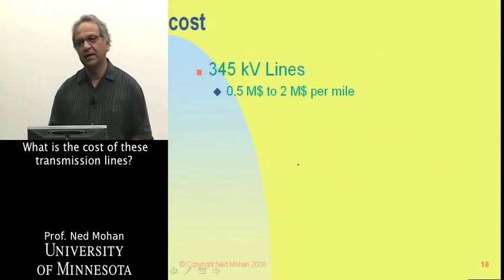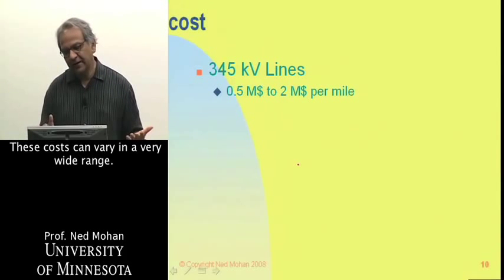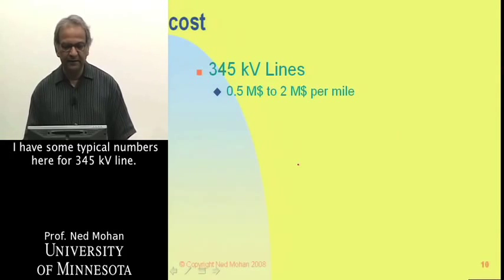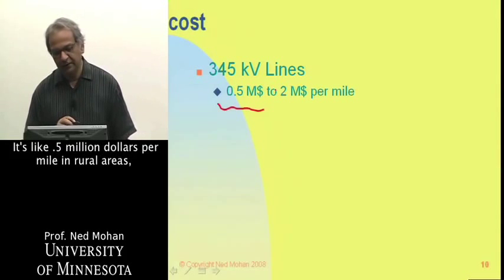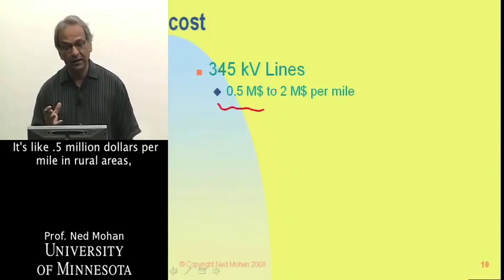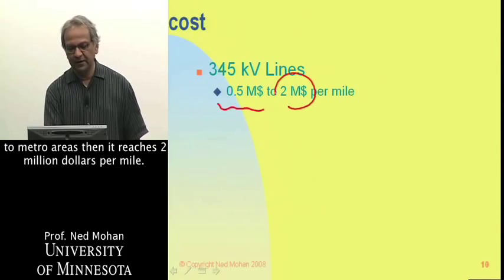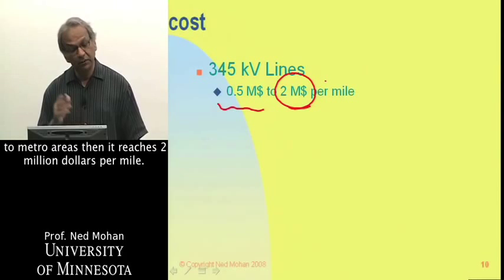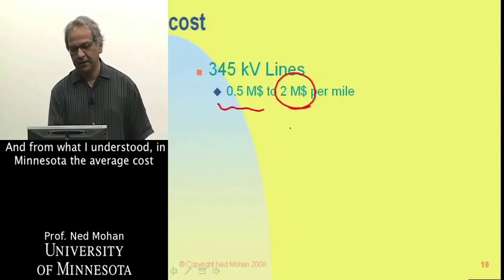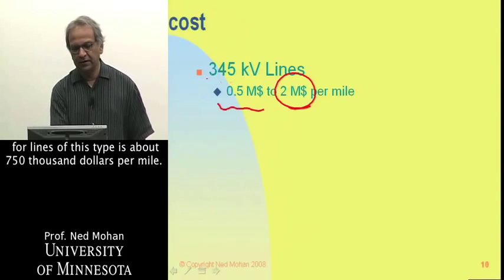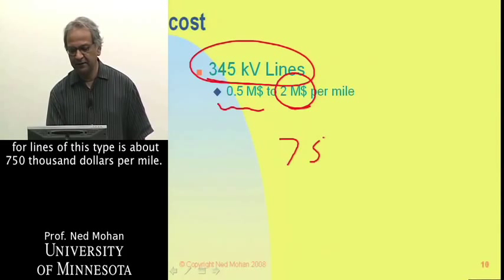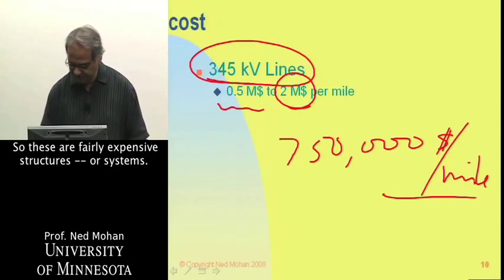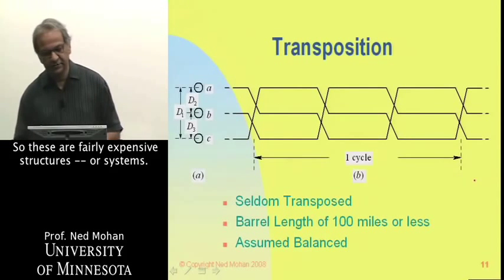What is the cost of these transmission lines? Costs can vary over a wide range. For a 345 kV line, it's about 0.5 million dollars per mile in rural areas, but closer to metro areas it can reach 2 million dollars per mile. In Minnesota, the average cost for lines of this type is about $750,000 per mile. These are fairly expensive systems.